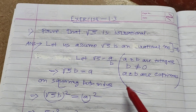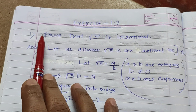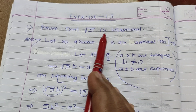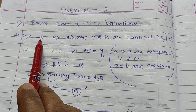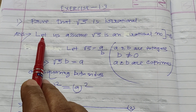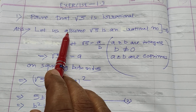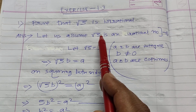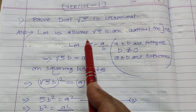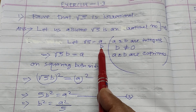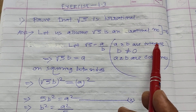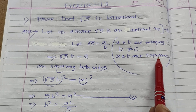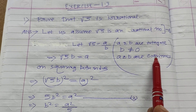Now let us move to exercise 1.3, question number 1: prove that root 5 is irrational. For this, we go by the contradiction method. Let us assume root 5 is a rational number. If root 5 is a rational number, root 5 can be written as a by b, where a and b both are integers, b is not equal to 0, and a and b both are co-primes.